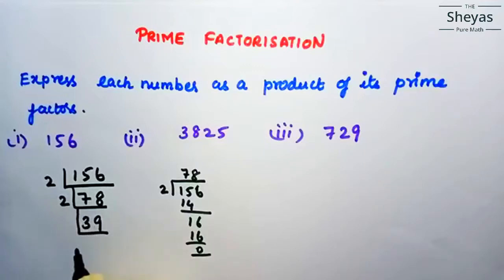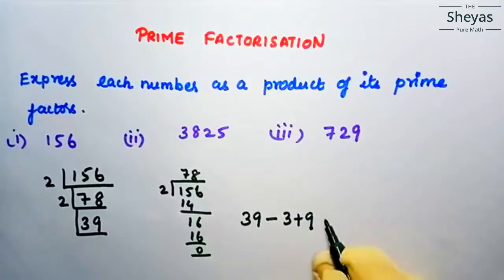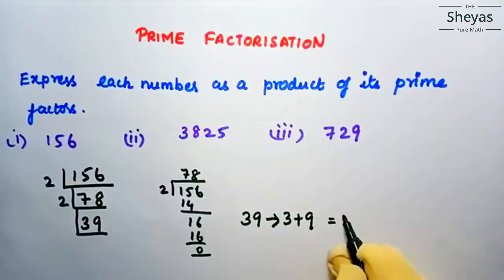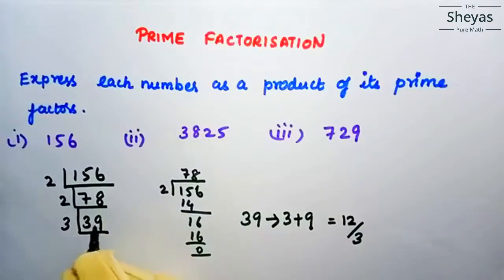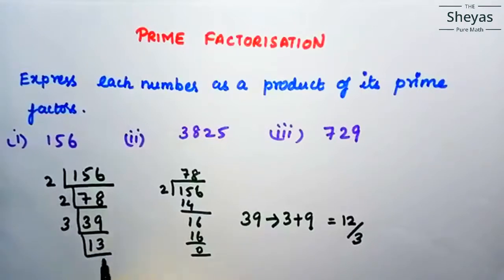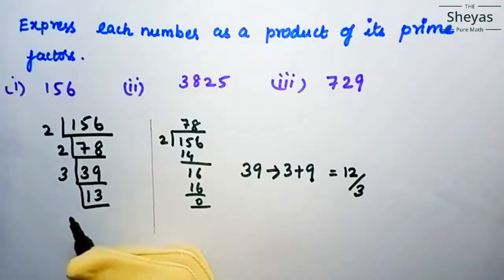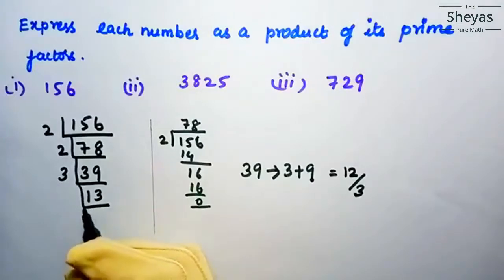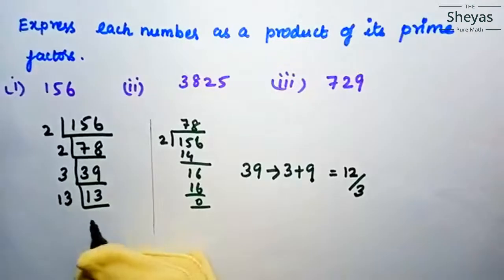Check divisibility of 39 by 3: 3 plus 9 equals 12, and 12 is divisible by 3. So 39 is divisible by 3. Dividing 39 by 3 gives 13. Now 13 is not divisible by 2, 3, 5, or any other prime number, because 13 is itself a prime number — it has no other factors. So we write 13 as it is.